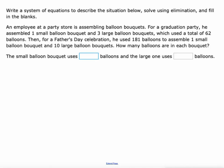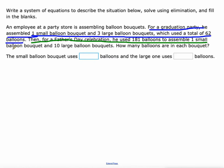An employee at a party store is assembling balloon bouquets. For a graduation party, he assembled one small balloon bouquet and three large balloon bouquets, which used a total of 62 balloons. Then for a Father's Day celebration, he used 181 balloons to assemble one small balloon bouquet and ten large balloon bouquets. How many balloons are in each bouquet?